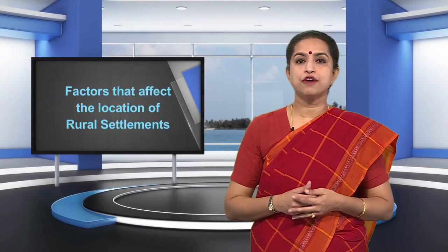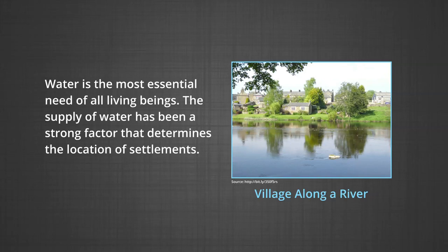There are a number of factors that affect the location of rural settlements. The first and most important factor is water supply. Water is the most essential need of all living beings, and the supply of water has been a strong factor in determining the location of settlements. Water is required not only for drinking, cooking, and washing, but also for economically important activities such as irrigation, transport, and house construction. Water bodies also act as a kind of natural defense to these settlements.